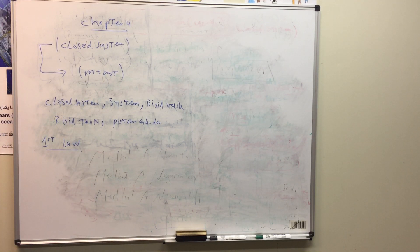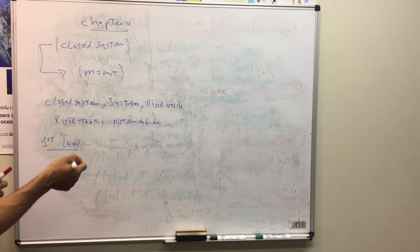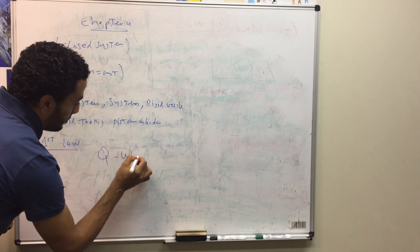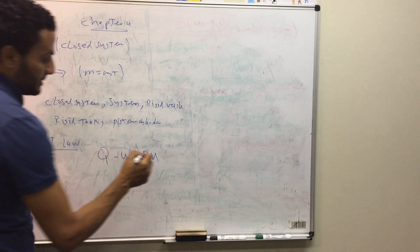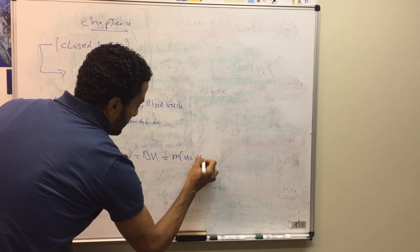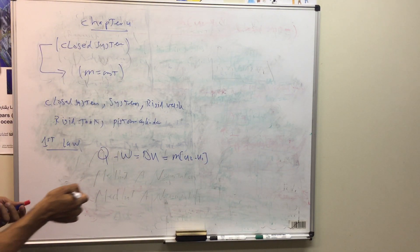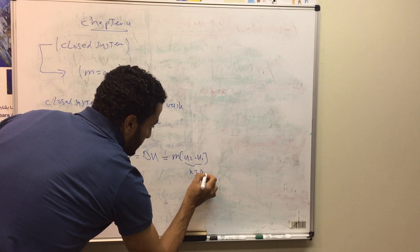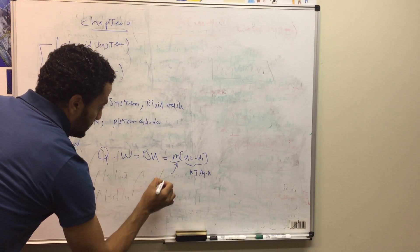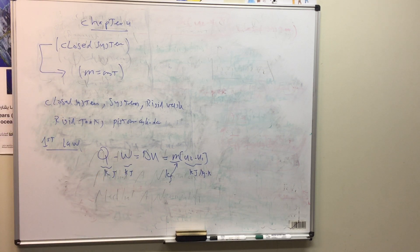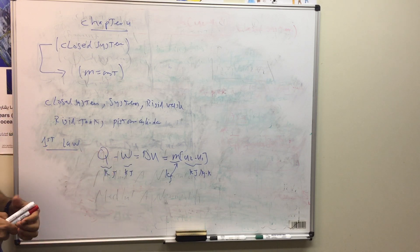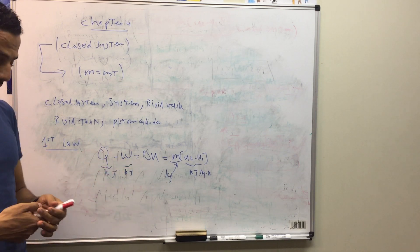I'm not here to give details on where the first law of thermodynamics equation comes from, just the equation itself. So: Q minus W equals ΔU — that is the first law of thermodynamics for a closed system. Since mass is constant, ΔU equals mass multiplied by (u2 minus u1), where u1 and u2 are specific internal energies in kJ/kg. Mass is in kilograms, and both heat transfer and work are in kilojoules.